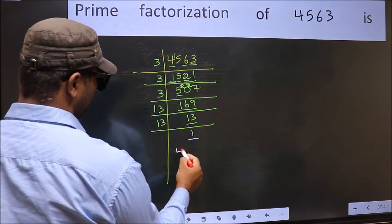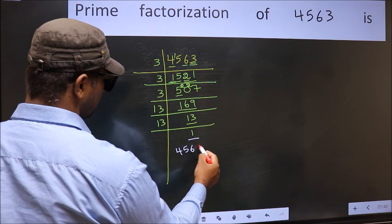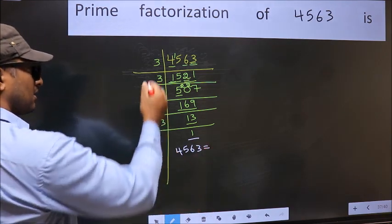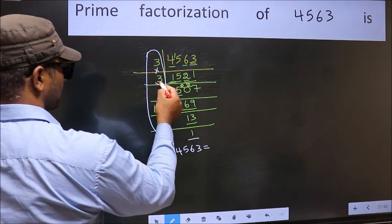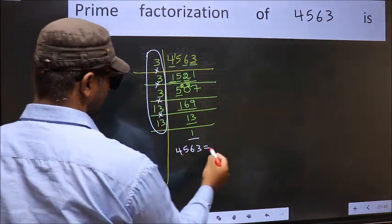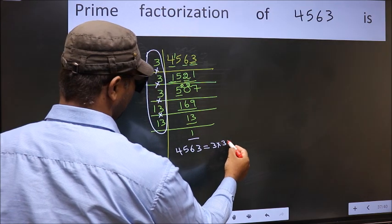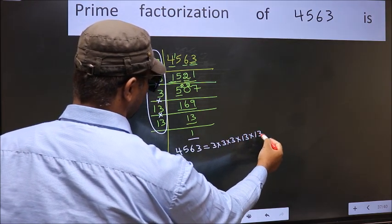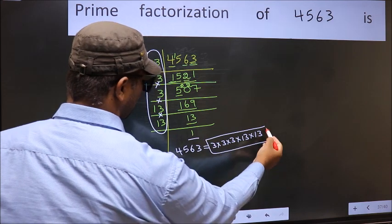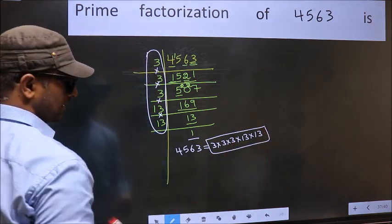So the prime factorization of 4563 is the product of these numbers. That is 3 into 3 into 3 into 13 into 13. This is the prime factorization of 4563.